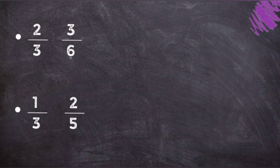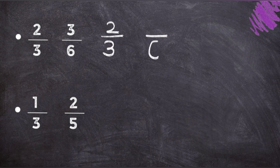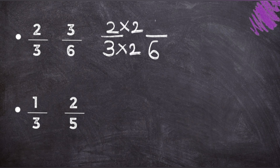The second example is 2 upon 3 and 3 upon 6. Follow the same steps: first check the denominators. Write the first fraction, 2 upon 3, then write the denominator of the second fraction, which is 6. Find the relation between the denominators — 3 times 2 gives 6. Now do the same in the numerator: 2 times 2 gives 4. So the equivalent fraction of 2 upon 3 would be 4 upon 6.